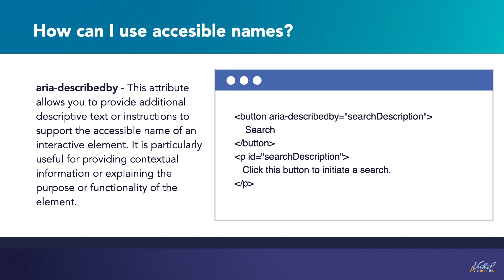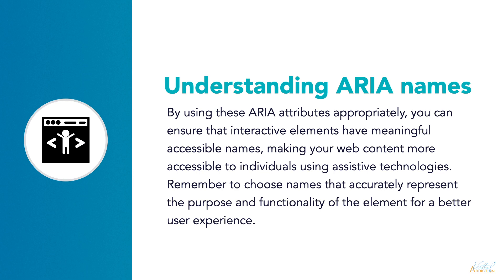The aria-describedby attribute allows you to provide additional descriptive text or instructions to support the accessible name of the interactive element. This is particularly useful for providing contextual information or explaining the purpose or functionality of the element. For example, the aria-describedby attribute on a button refers to a paragraph element that provides a description. When the button is focused or activated, assistive technologies announce the accessible name 'search' along with the additional descriptive text. Remember to choose names that accurately represent the purpose and functionality of the element.